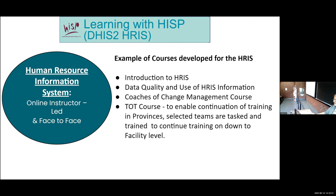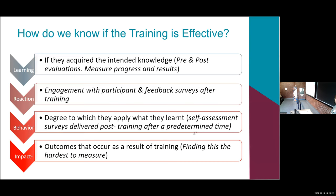Train of Trainers enables continuation of training in provinces, with people selected and tasked to train down to facility level. For the Maps Academy course, we had sponsorship for staff from the Ministry of Health in South Africa, and one criteria for receiving sponsorship was what training had you done to cascade down your knowledge - a big emphasis on continuation and cascading down. Measuring training effectiveness is exceptionally difficult: pre and post learning, reaction, engagement, feedback, behavior, and self-assessment surveys all matter, but the impact of training - outcomes that occurred as a result - is the hardest to measure.